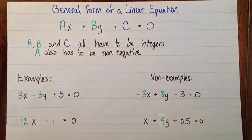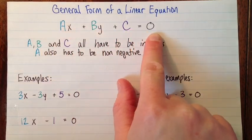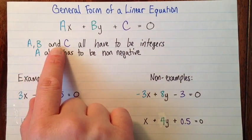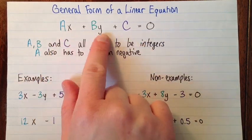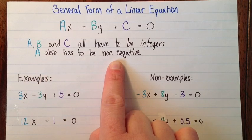There are some rules for what makes general form. We have to have Ax + By + C = 0. A, B, and C all have to be integers, and A also has to be non-negative. So it could be zero, but it can't be negative four, for example.